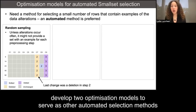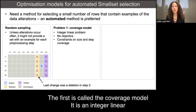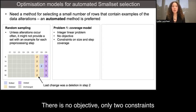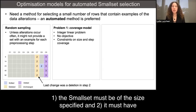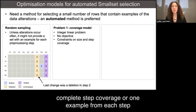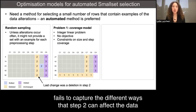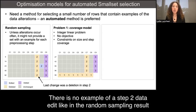Therefore, we developed two optimization models to serve as other automated selection methods. The first is called the coverage model. It is an integer linear problem that we solve using the Gurobi optimization software. There is no objective, only two constraints. One, the small set must be of the size specified, and two, it must have complete step coverage or one example from each step. We can see from the test that it achieves step coverage but fails to capture the different ways that step two can affect the data. There is no example of a step two data edit like in the random sampling result.